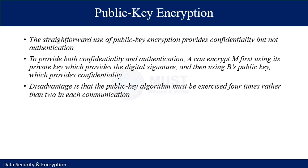The straightforward use of public key encryption provides confidentiality but does not provide authentication of the source. To provide both confidentiality and authentication, A can encrypt the message first using its private key (providing digital signature) and then using the public key (providing confidentiality). The disadvantage of public key encryption is that the public key algorithm must be exercised four times rather than two times in each communication.